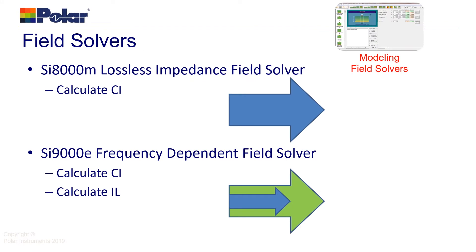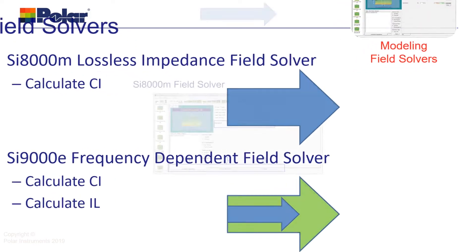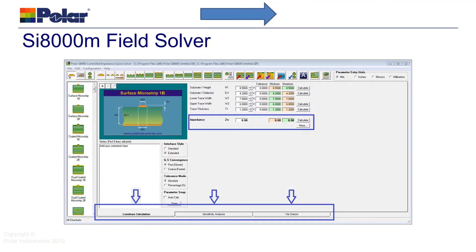Looking first at the two field solvers, the SI8000 is an entry-level field solver for accurate calculation of characteristic impedance. The SI9000 field solver adds to the SI8000 the ability to calculate insertion loss. A brief look at the SI8000 field solver shows you that you can calculate impedance, but also sensitivity to production variation and some basic checks on via signal integrity.